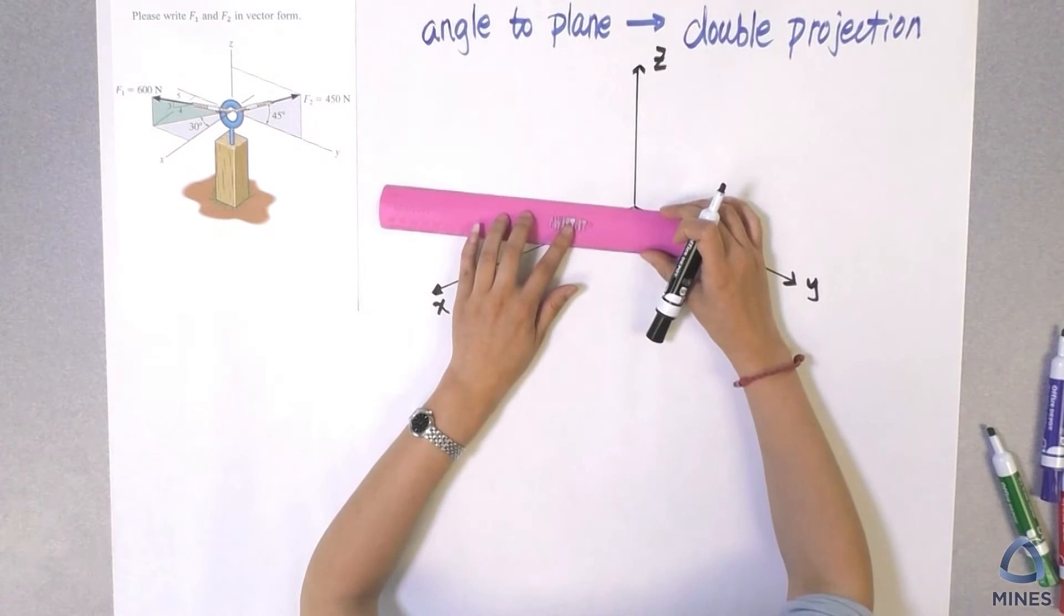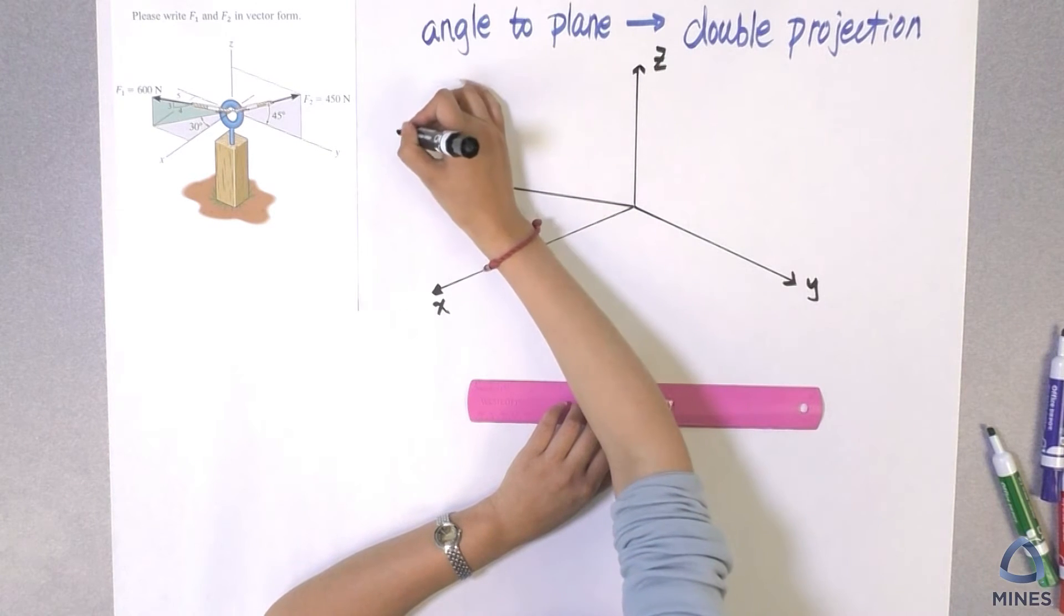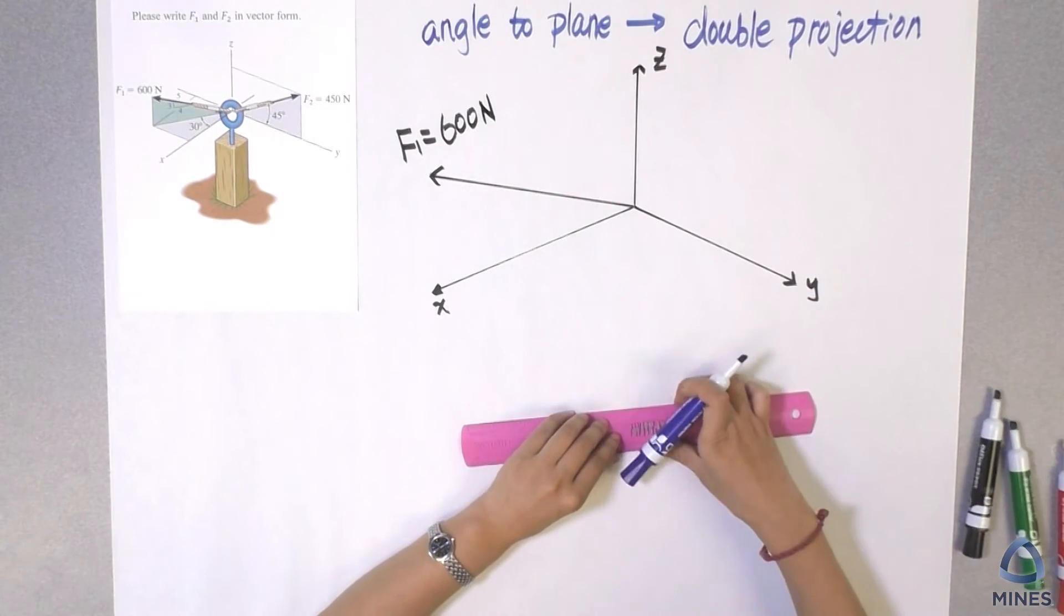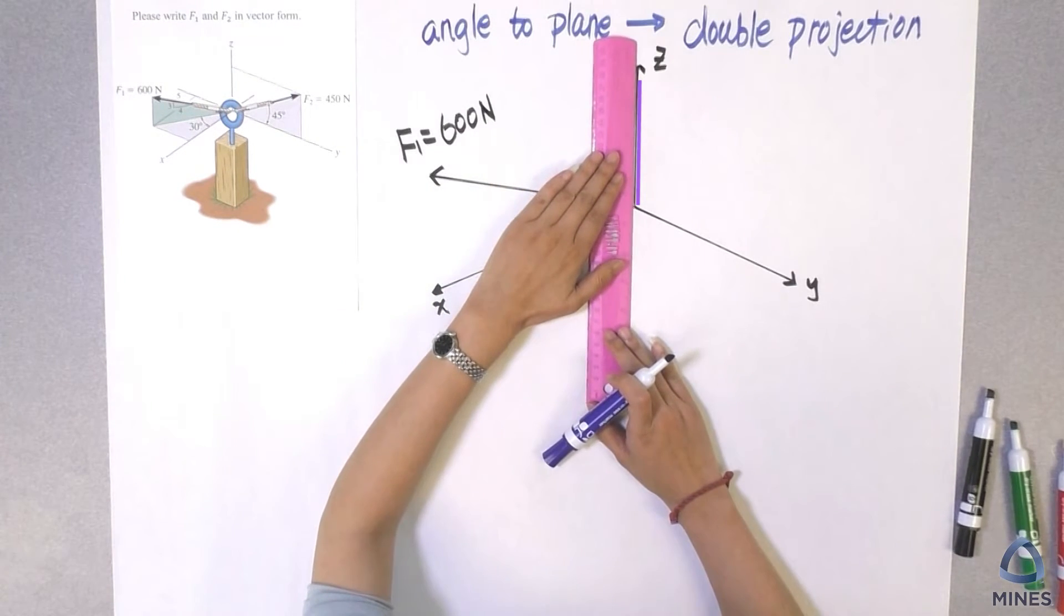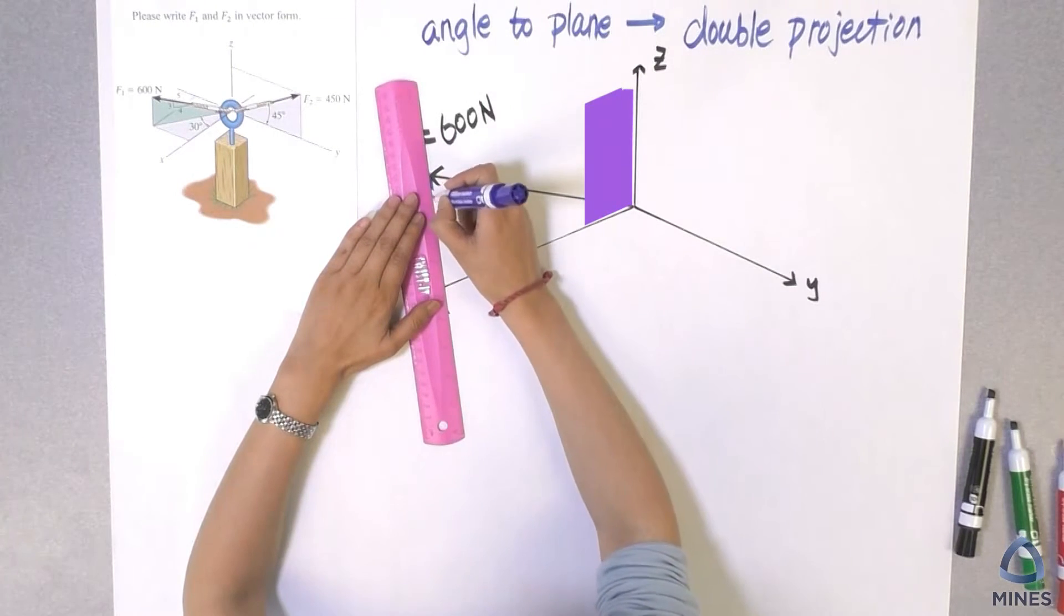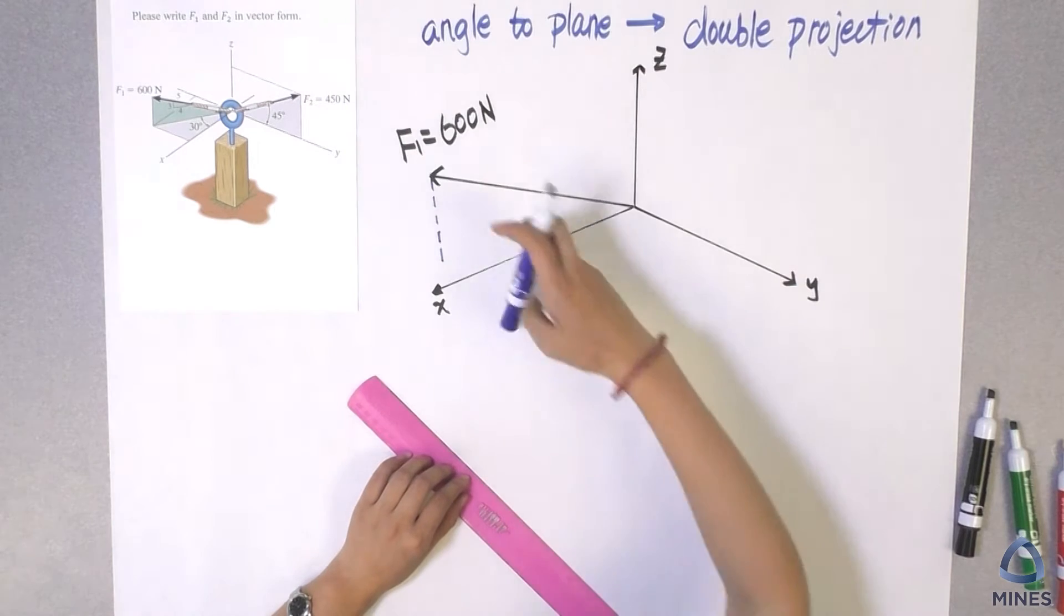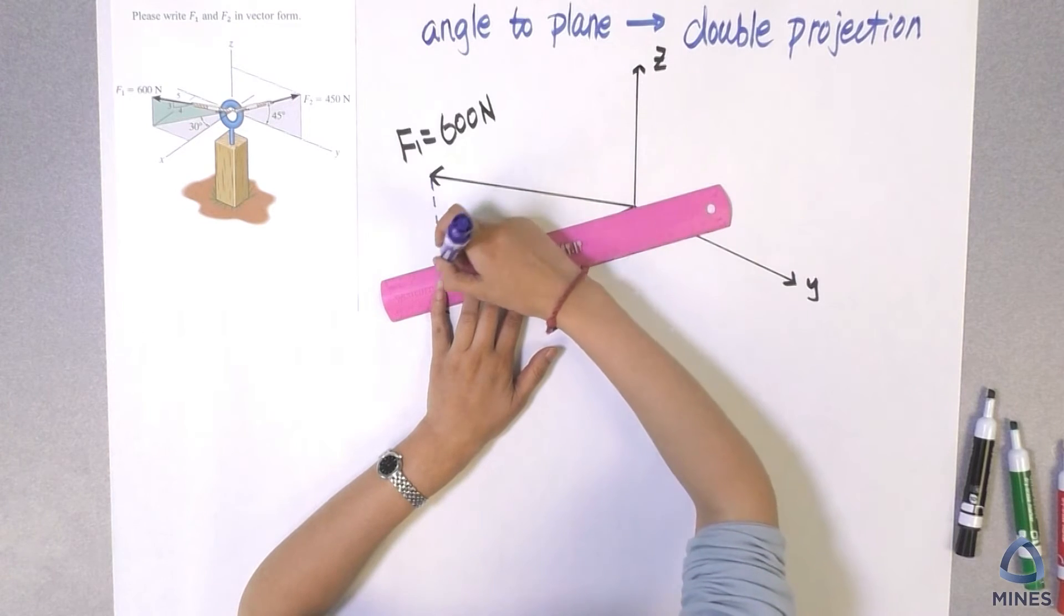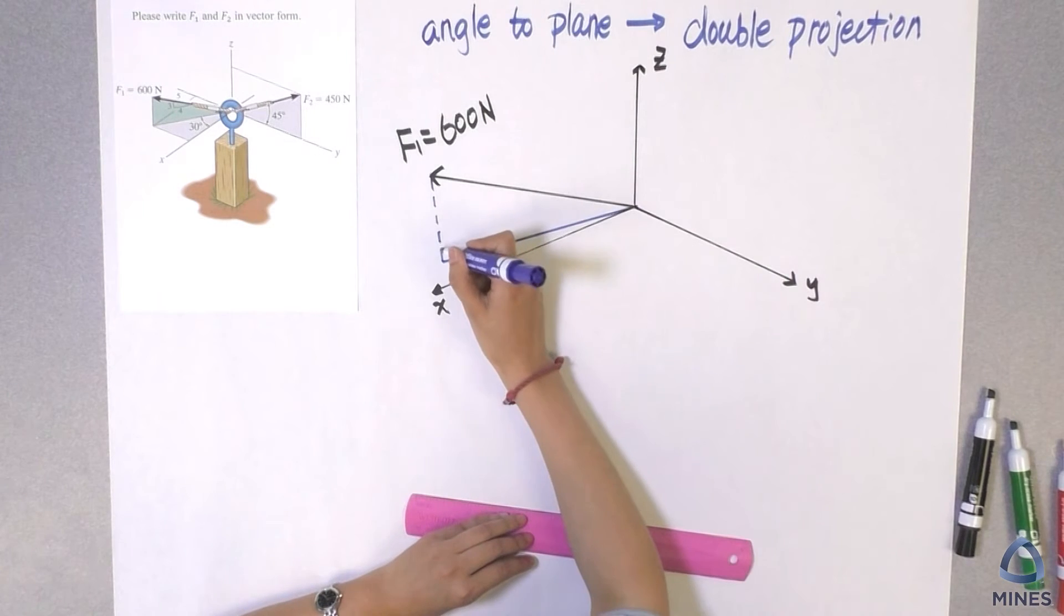Now you can see we had a force 600 Newton going this way. This is our F1, 600 Newton. So now let's take a look at the triangle here. What we are going to do is try to project the line to the XY plane. So we are going to draw a line parallel to the Z axis here, and we are going to know this line is going to be perpendicular to any line in the XY plane.